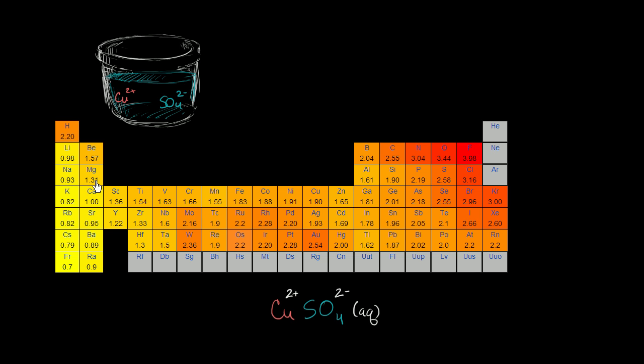Now we're going to do a little experiment. We're going to take some solid zinc. Solid zinc would have this kind of metallic gray color. We're going to take a powder of solid zinc metal and throw it into this solution and think about what is going to happen. So that's solid zinc right over there.